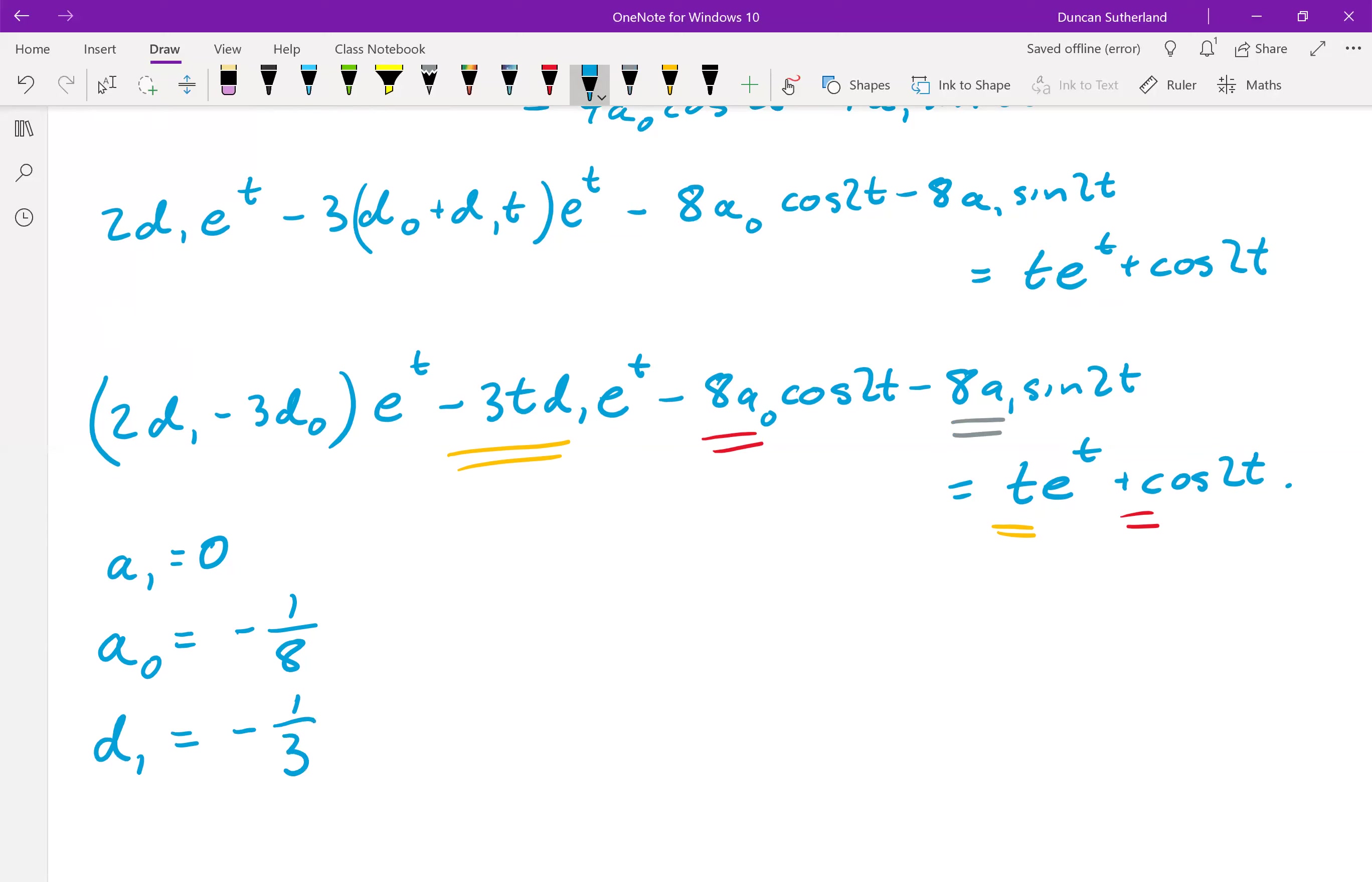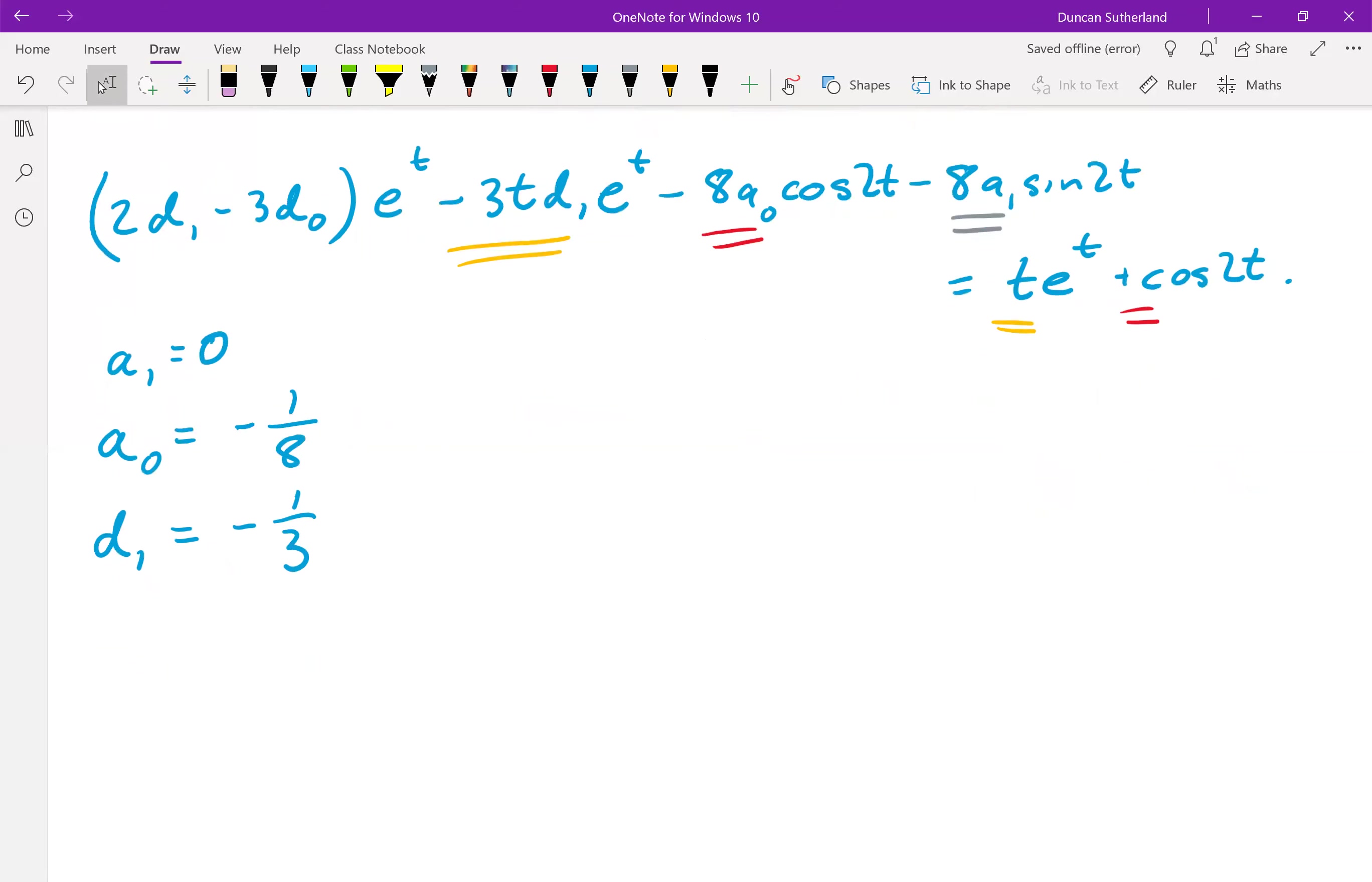The last one then is this one here. We have 2d1 minus 3d0. All right. There's no e to the t on this side. So this has got to be zero. But because we know what d1 is, we can solve this fairly comfortably for d0.